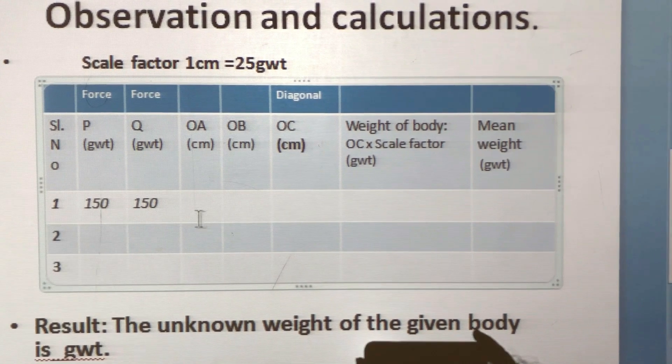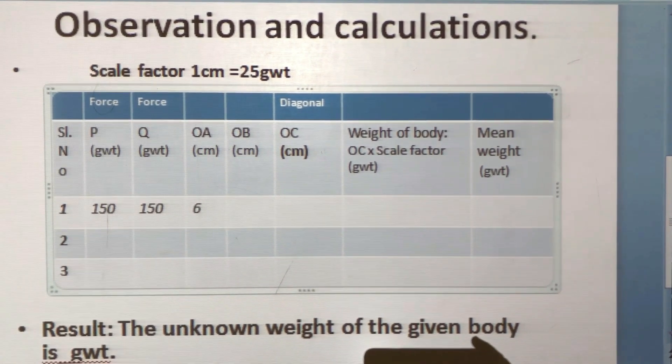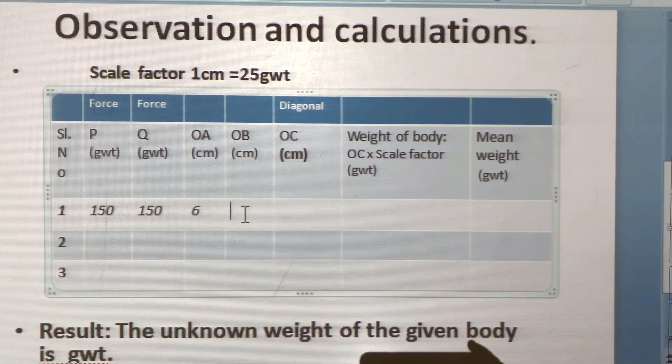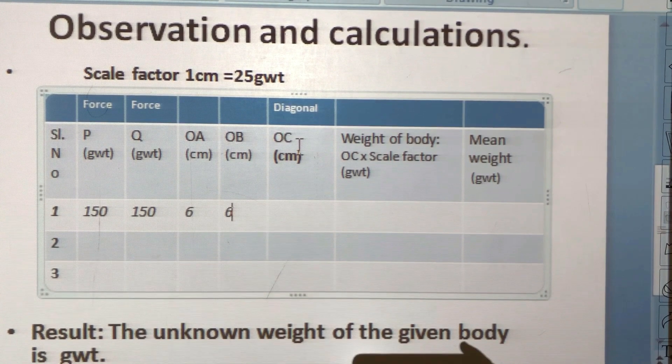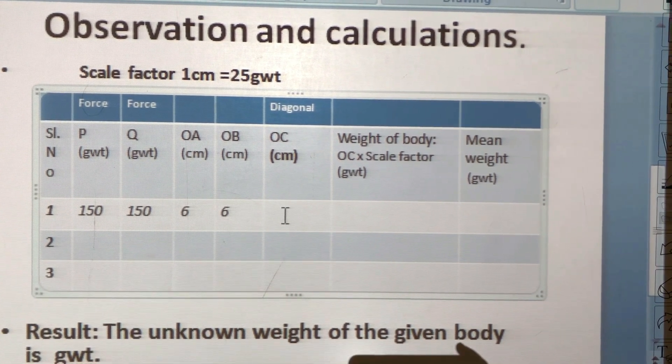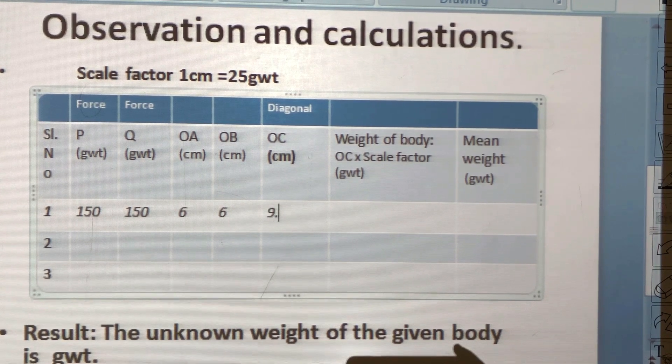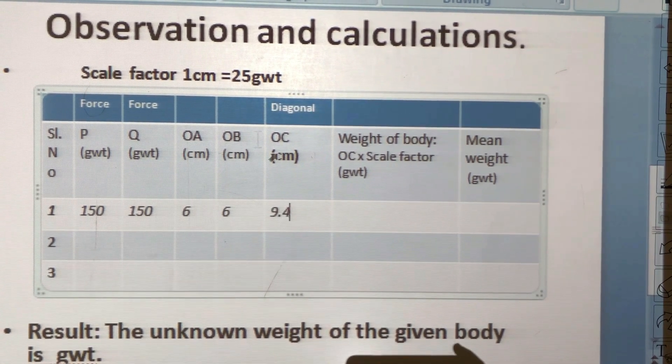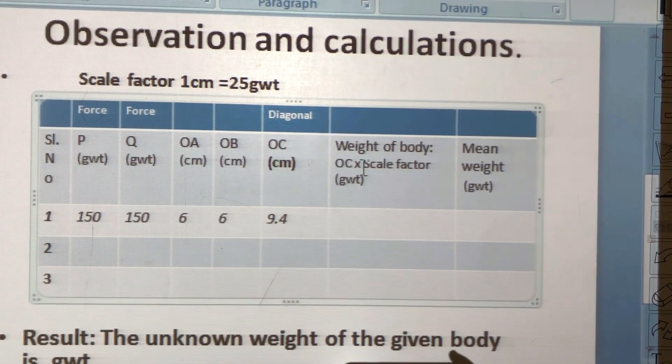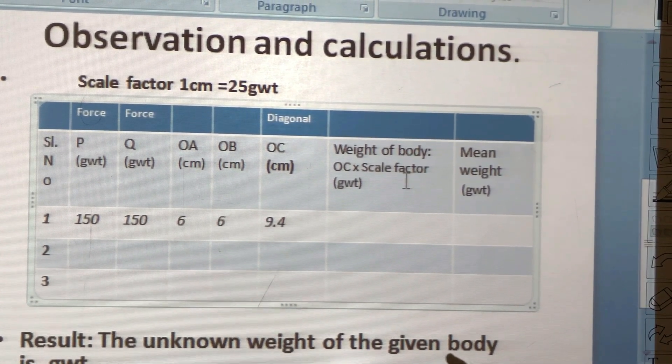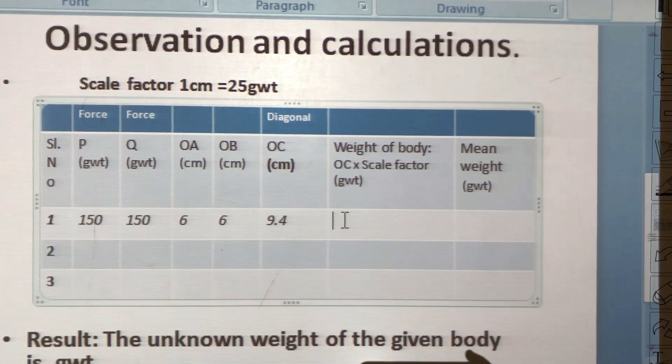We measured OA as 6 centimeters, similarly OB was measured also as 6 centimeters, and OC, the diagonal, was measured to be around 9.4 centimeters. So to calculate the weight of the body, it is OC into scale factor, so that is 9.4 into 25.